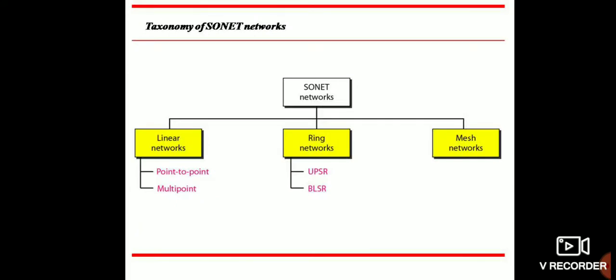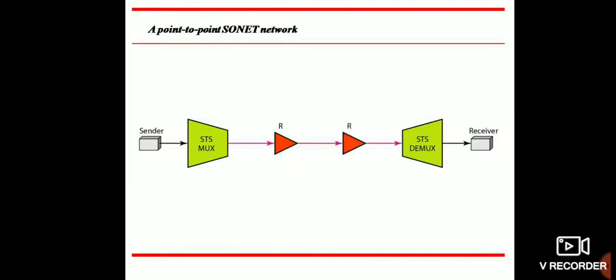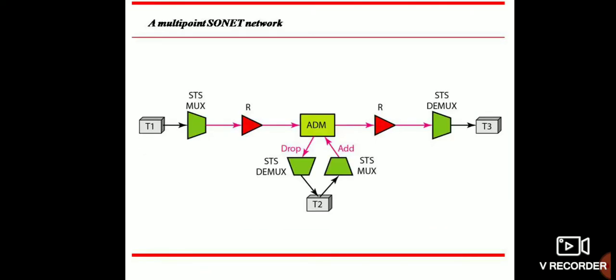SONET networks are linear networks which can be classified as point-to-point and multipoint. Ring networks include UPSR, BLSR. And mesh networks. Components include repeater, STS demultiplexer, repeater, ADM on top of an STS image, and BSTM.